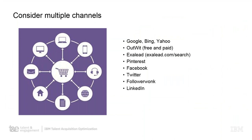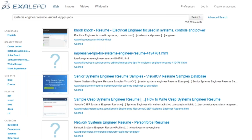Consider multiple channels — don't just rely on Google. What you get on Bing or Yahoo may differ. There are other tools like Outlet — free and paid — and ExcelLead, a broader search engine. Future trainings will cover Pinterest, Facebook, and Twitter. Followerwonk allows you to search Twitter. ExcelLead goes out and pulls results across multiple websites and search engines simultaneously — a great tool for broader sourcing.